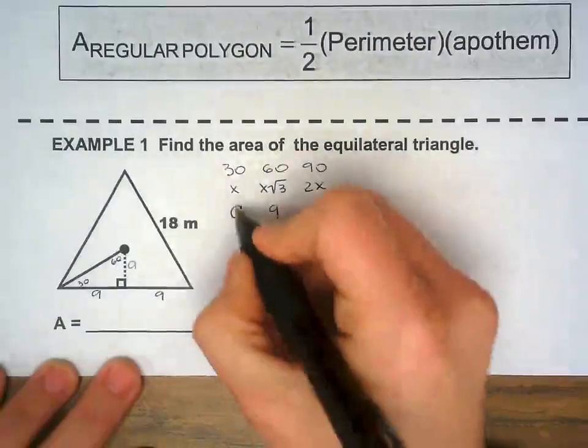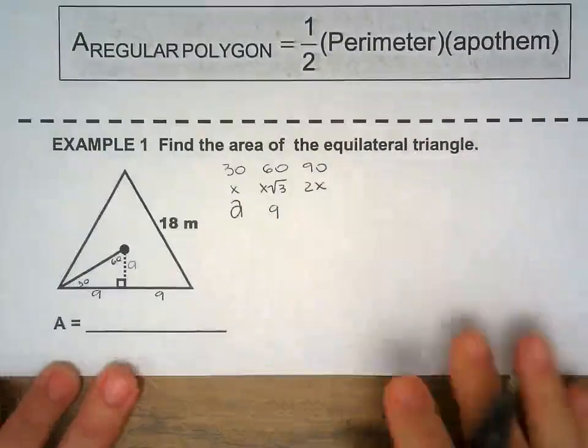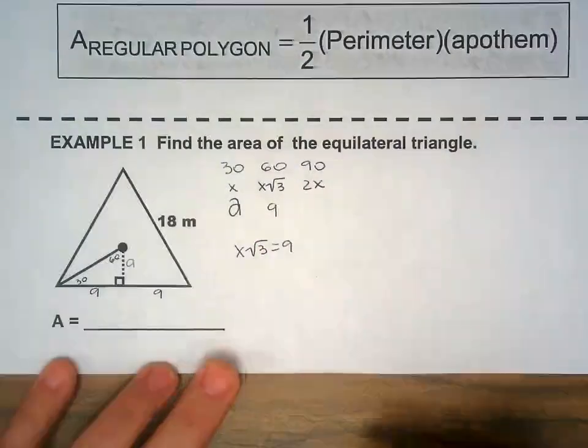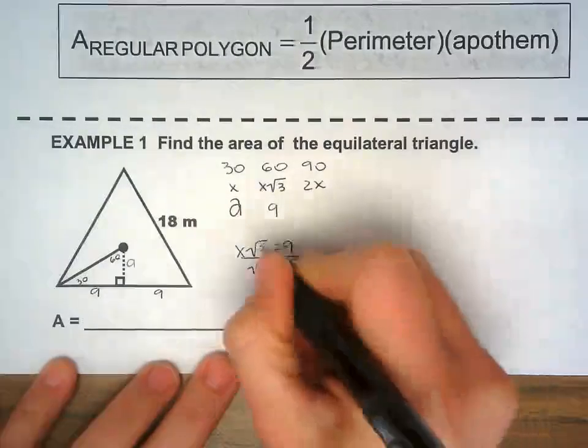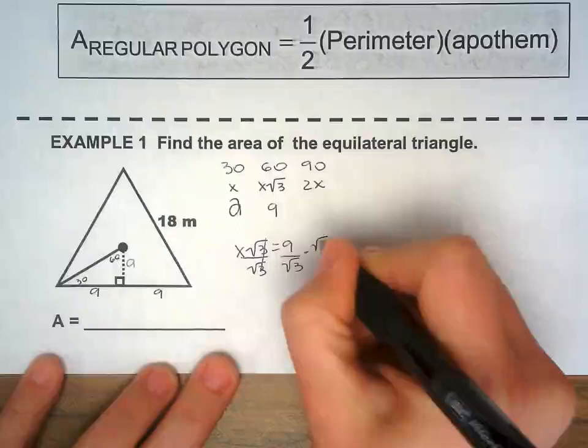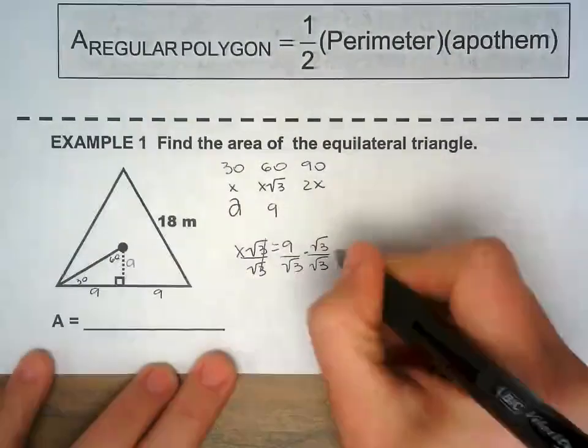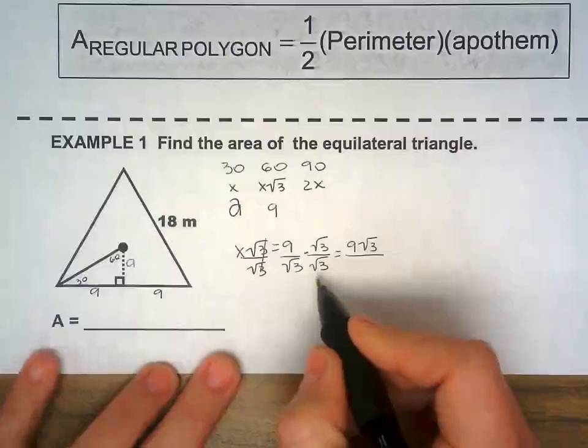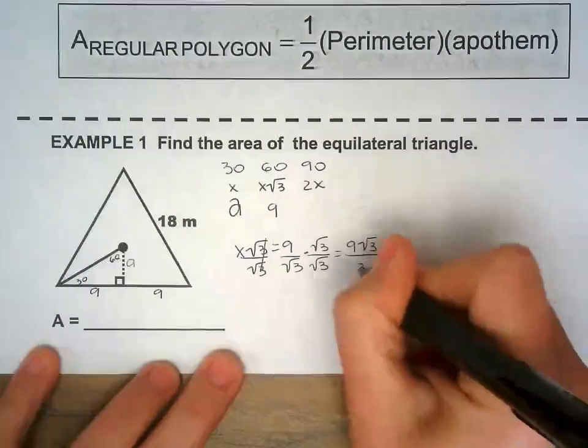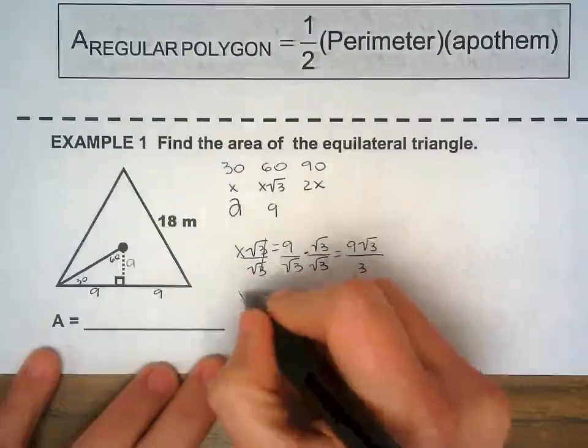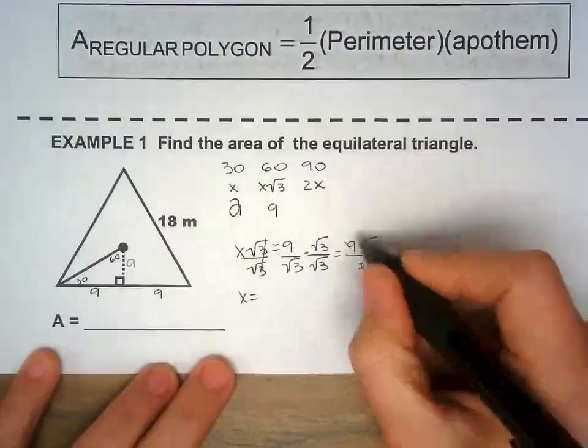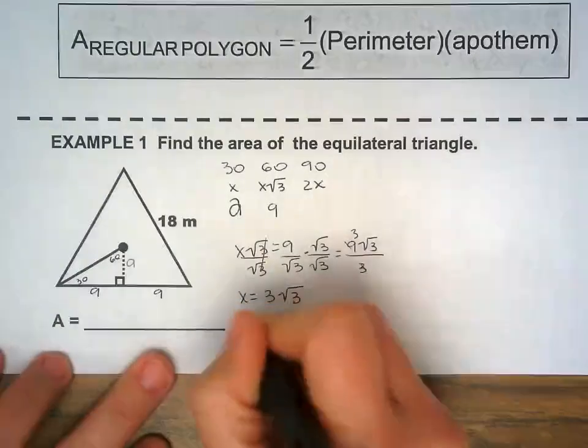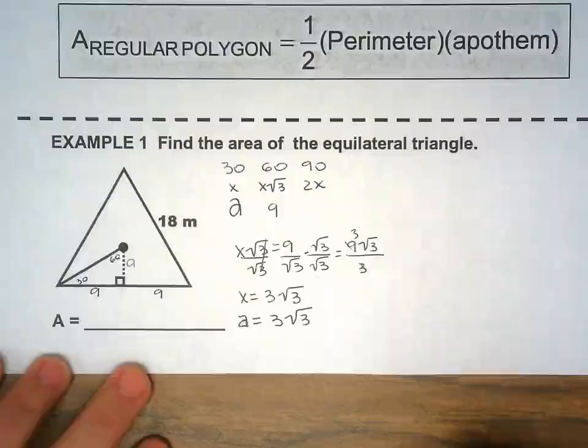So a right here, this is a, this is 9. So x square root of 3 equals 9. I'm gonna divide both sides by square root of 3. And then we need to rationalize the denominator by multiplying numerator and denominator by square root of 3. When you simplify that you get 9 square root of 3 over square root of 3 times square root of 3 is square root of 9. Square root of 9 is 3. Now you have to simplify this fraction. 9 divided by 3 is 3. So x is 3 square root of 3. And x is the same thing as the apothem. So the apothem here is 3 square root of 3.